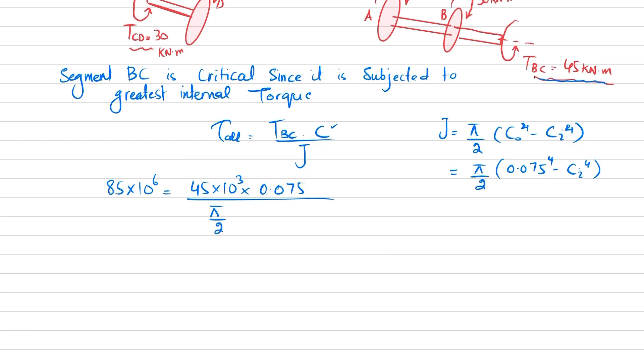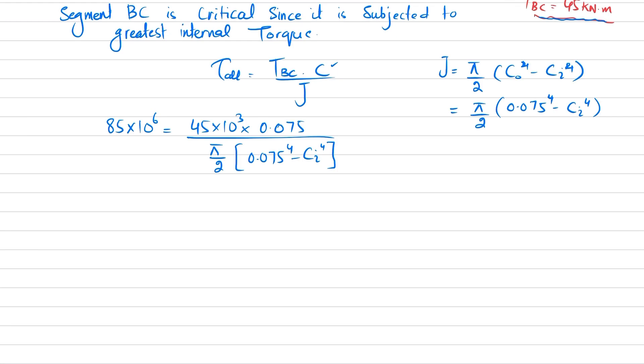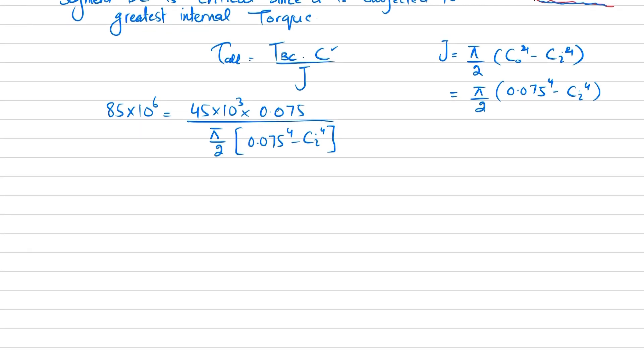Now it's very easy, you can just solve it using your scientific calculator. When you solve it, you will get ci, our inner radius, will be equal to 0.0502 meter, or you can see ci is equal to 50.2 millimeter.